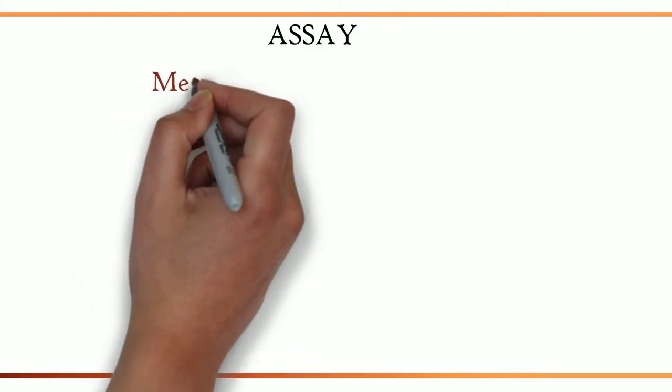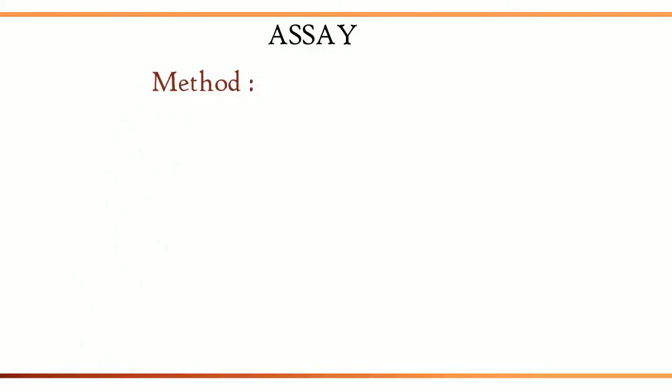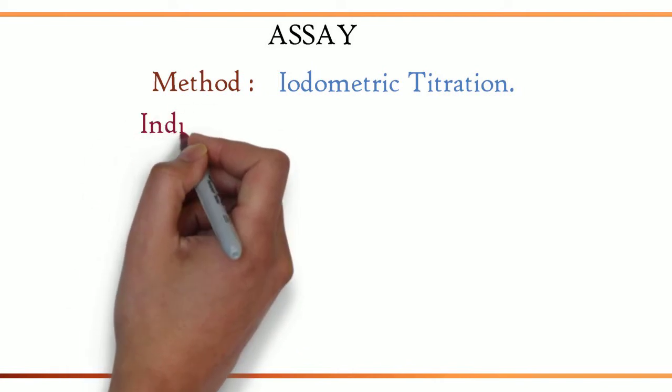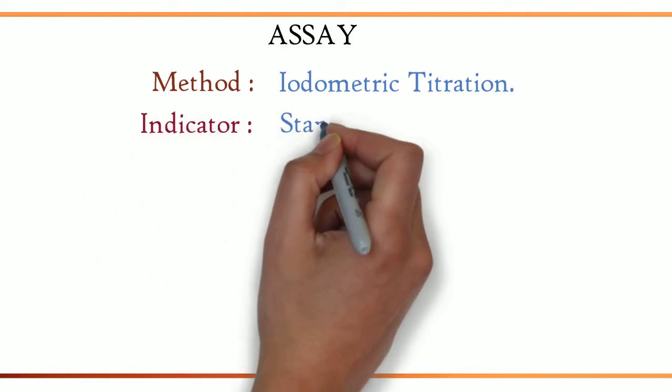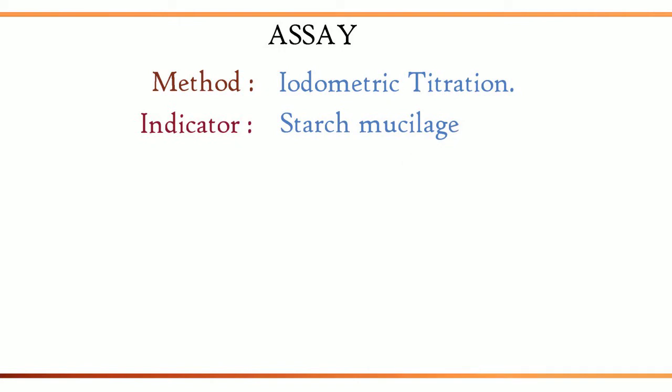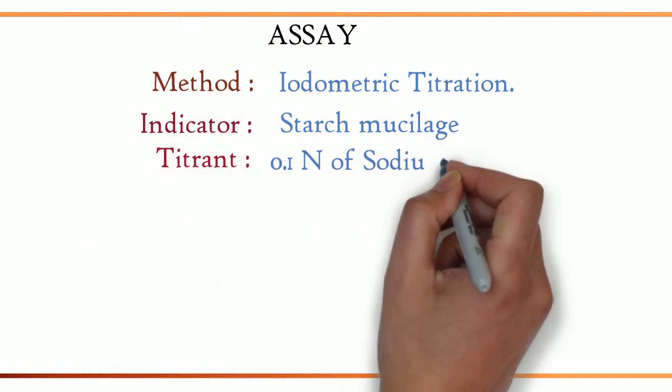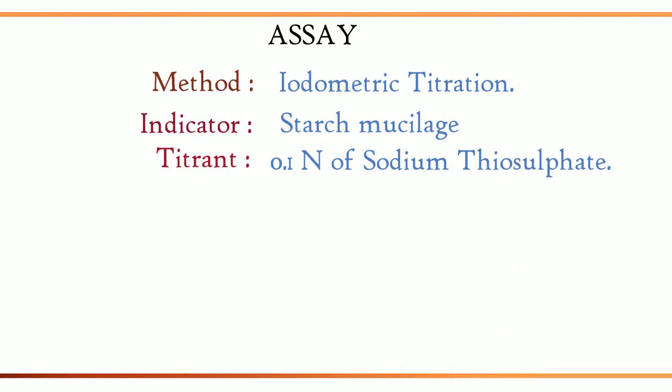Now, the assay. The method used is iodometric titration. The indicator used is starch mucilage. The titrant used is 0.1 normality of sodium thiosulfate.